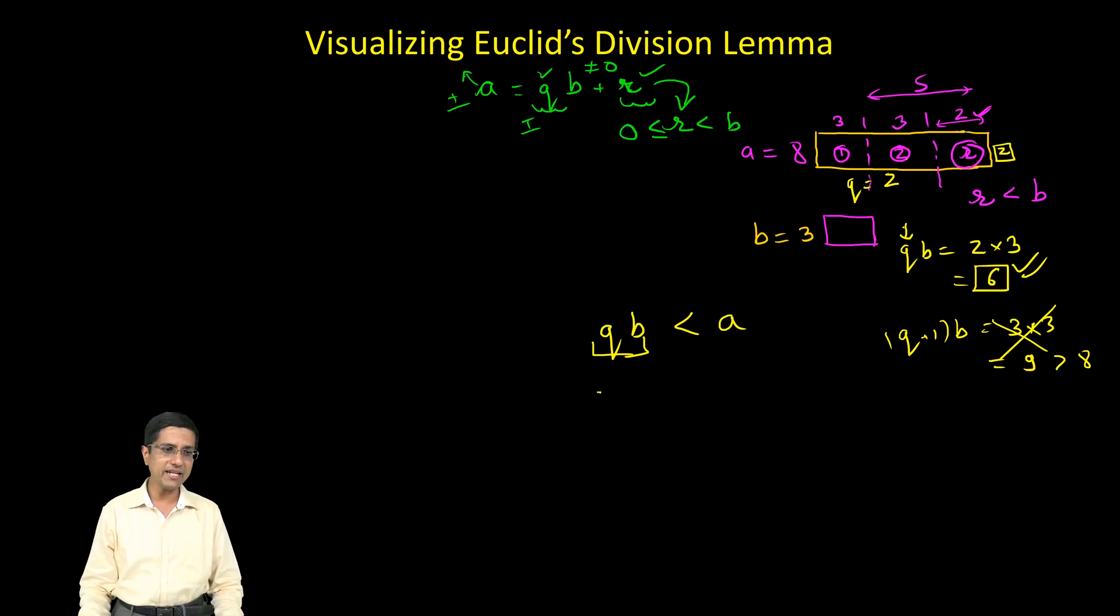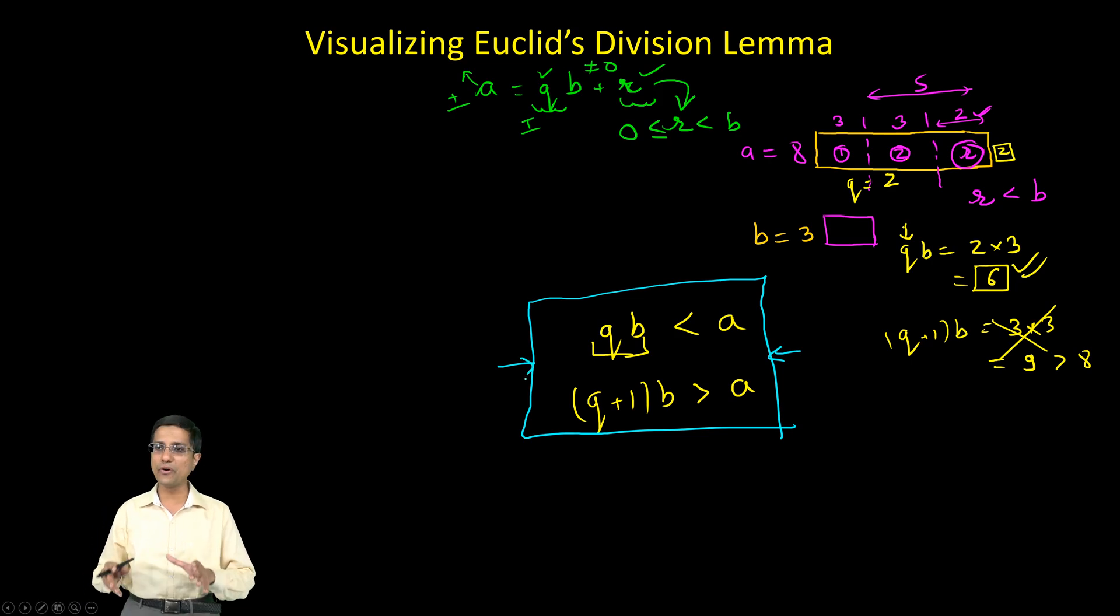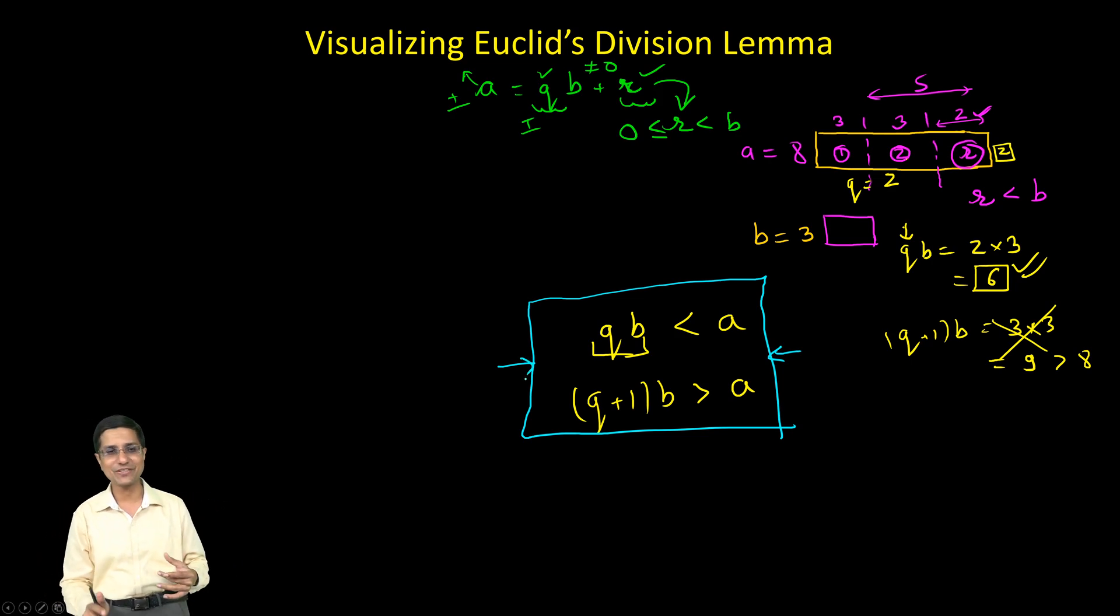By the very extension, the very next value of Q would take us above A. So these are the two important inequalities which would allow us to sort of work with negative integers. With negative integers, a little bit complicated but of course they are not insurmountable just like any other problem, they are also surmountable.